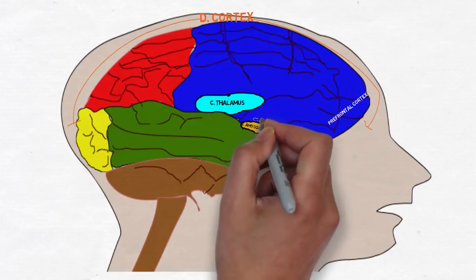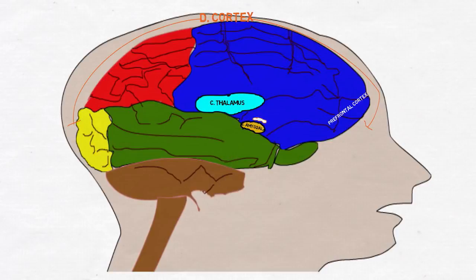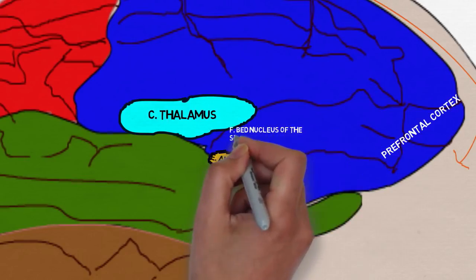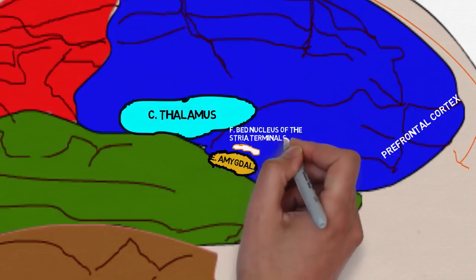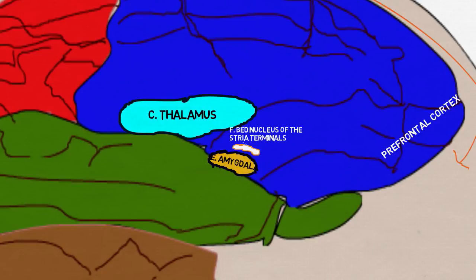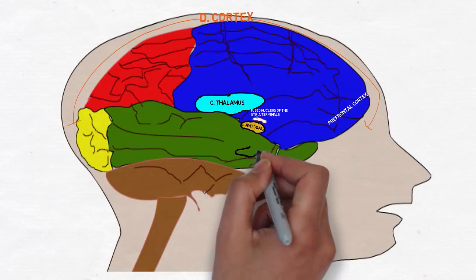The bed nucleus of the stria terminalis is particularly interesting when we discuss anxiety. While the amygdala sets off an immediate burst of fear, the BNST perpetuates the fear response, causing longer-term unease typical of anxiety.